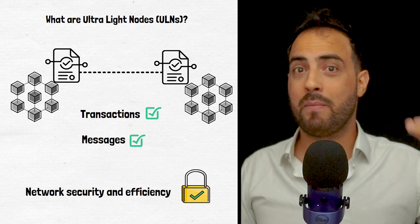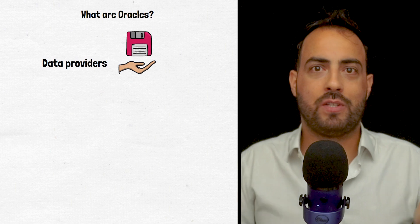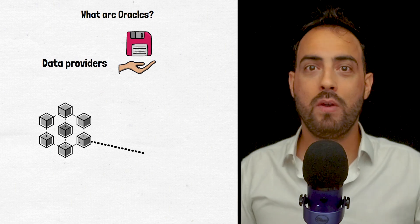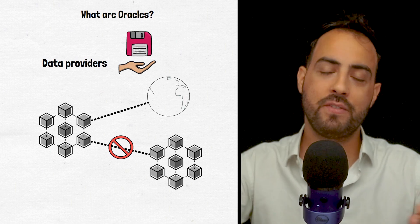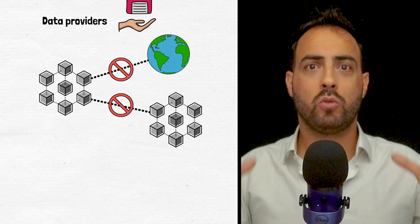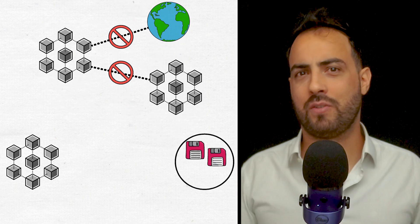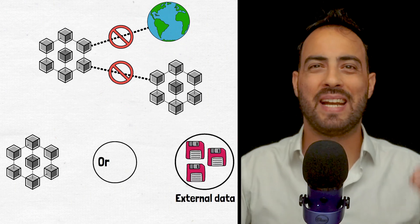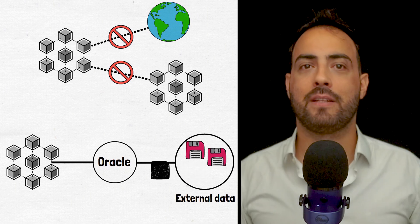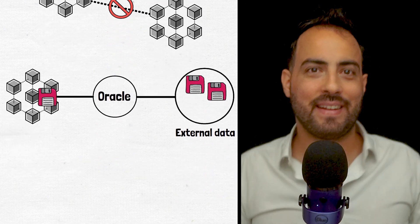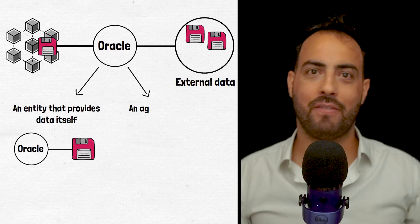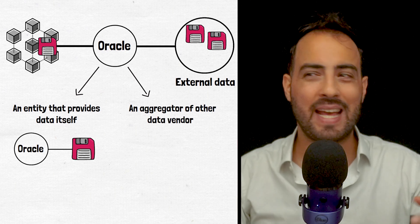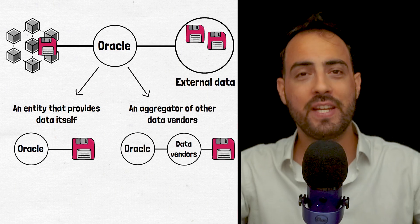Next, oracles can be best described as data providers. Natively, most blockchains do not communicate with other blockchain networks, nor do they receive any data from outside off-chain sources. Oracles exist to fill a gap in smart contract functionality where blockchains require external data but are unable to get it. An oracle is either an entity that provides data itself or is an aggregator of other data vendors to give the blockchain a reliable result when they query off-chain data.